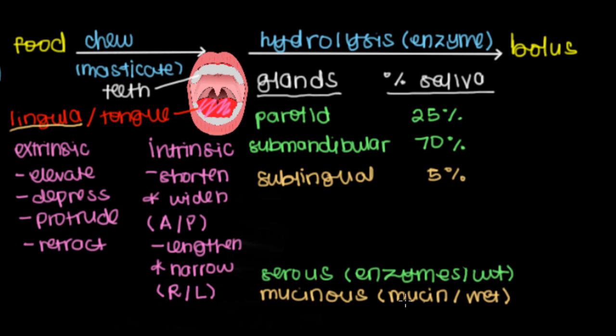Finally, the last gland that contributes to hydrolysis in our mouth is called von Ebner's gland, which releases less than 5% of our salivary contents. These are mainly located at the tip of our tongue.